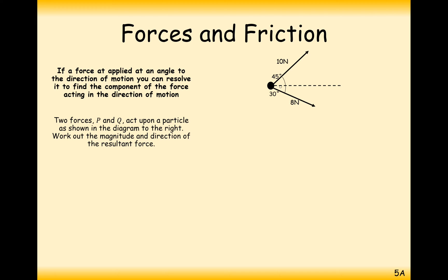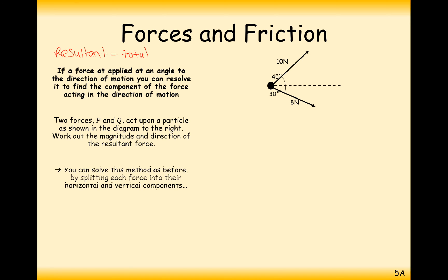Moving on to a slightly trickier question. Imagine looking down at a particle on a table from above, with two strings pulling it in different directions. Forces P and Q act on the particle as shown. We need to find the magnitude and direction of the resultant force — 'resultant' means the total combined force.